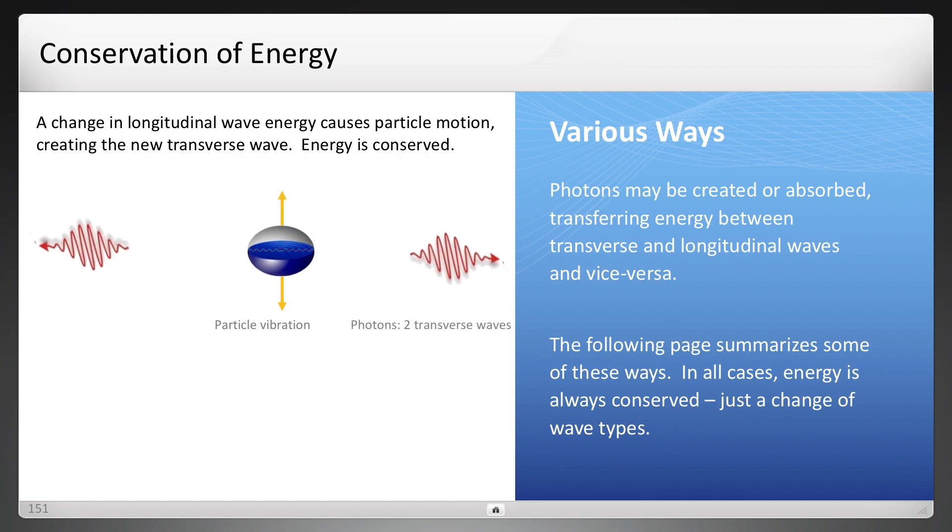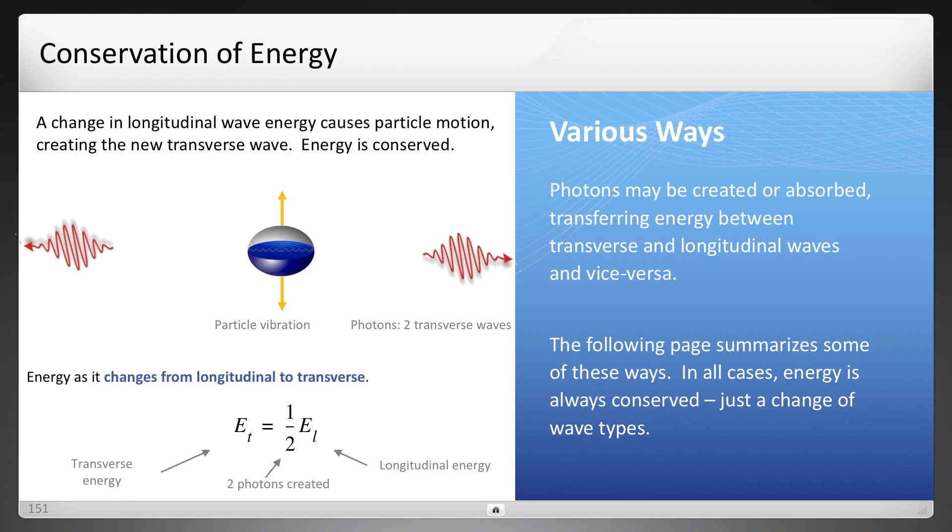A particle vibrates and two photons are generated. Calculating the transverse energy there of just one of those photons, ET for transverse, is half the longitudinal energy, because two were created.